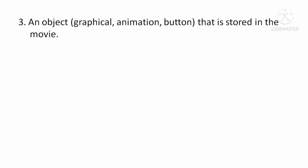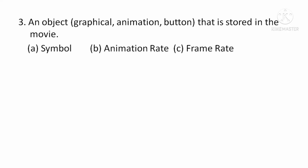Next, an object that is stored in the movie. Means, एक object जो movie में stored होता है, उसे कहते हैं. Option A: Symbol, Option B: Animation Rate, Option C: Frame Rate. इसका answer होगा Option A, Symbol.